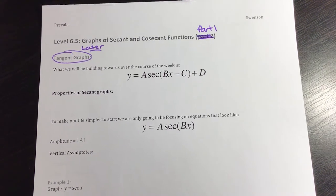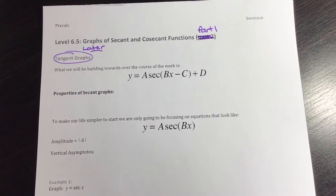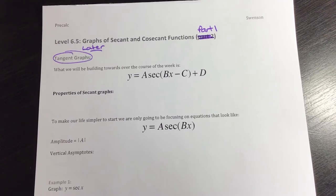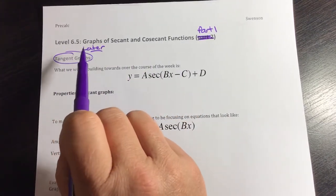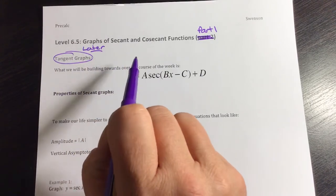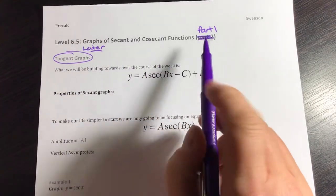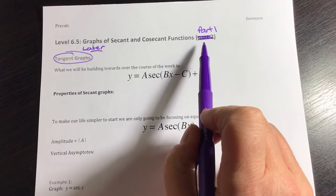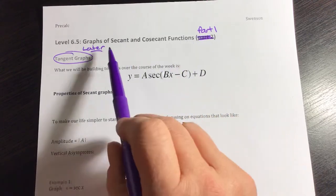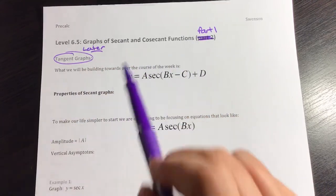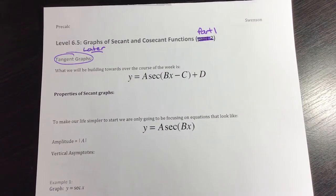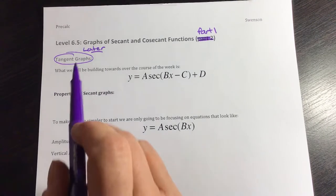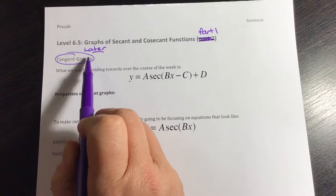In this next section, we're going to look at graphs of secant and cosecant functions. Technically, in section 6.5, we're going to look at secant, cosecant, tangent, and cotangent. In the book, cotangent and tangent graphs are first, but I want to do secant and cosecant first mainly because they relate closely to the sine and cosine functions that we just did. So we'll get to tangent graphs later.